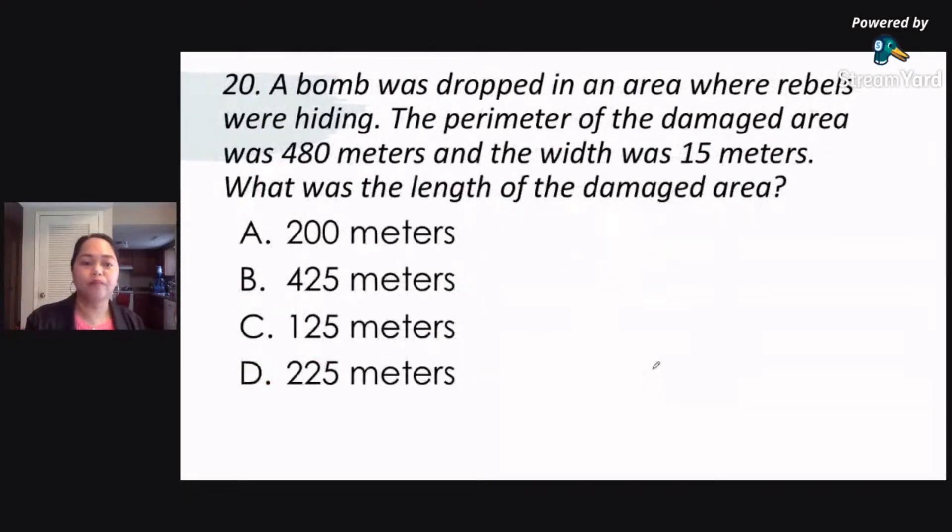Now we go to number 20. This is still math. A bomb was dropped in an area where rebels were hiding. The perimeter of the damaged area was 480 meters and the width was 15 meters. What was the length of the damaged area? So you are given the perimeter, 480 meters, and you're also given the width of 15 meters. And you are asked for the length. How long is the damaged area if you are given the perimeter of 480 meters and the width is 15 meters?